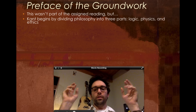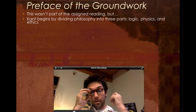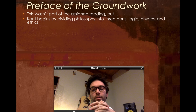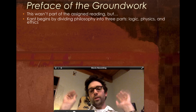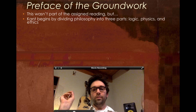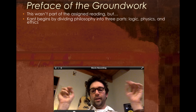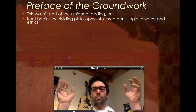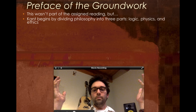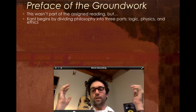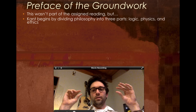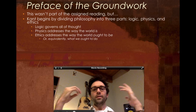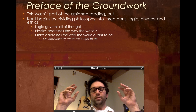The preface. The Groundwork of the Metaphysics of Morals is the name of the book that Kant wrote, which you're reading only an excerpt of. The preface of that book wasn't part of the assigned reading, but I'm going to talk about it because it helps us situate what's going on. What Kant does in the preface is first divide philosophy into three basic parts: logic, physics, and ethics. Kant was writing in the 1700s, and physics was just beginning to emerge as its own thing, but philosophers correctly, for most of history, thought of physics as a part of philosophy.